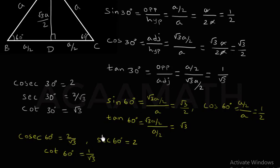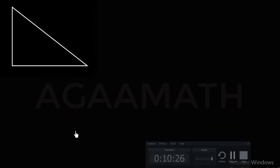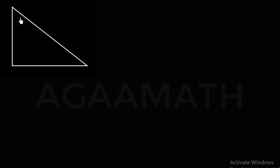Let us see about the trigonometric ratio values — sine 45 degrees, cos 45 degrees, and the remaining ratios also. Here I have taken a right angle triangle. And let us imagine that this right triangle ABC is an isosceles right angle triangle.